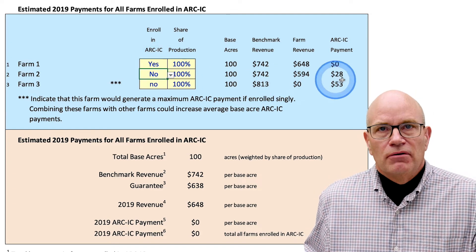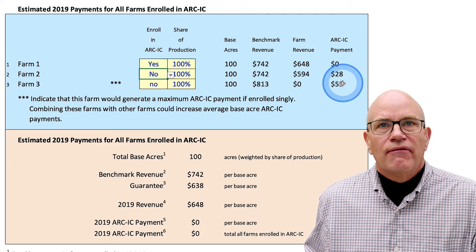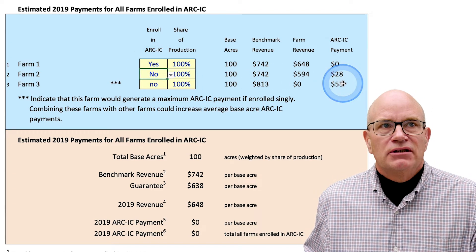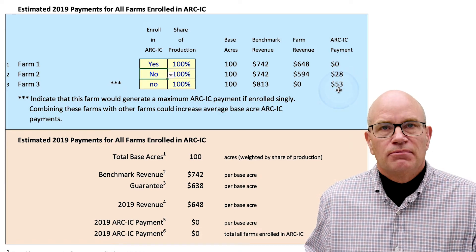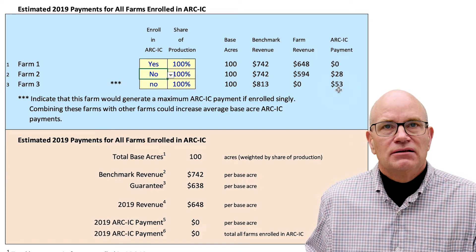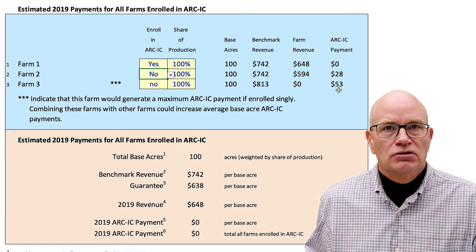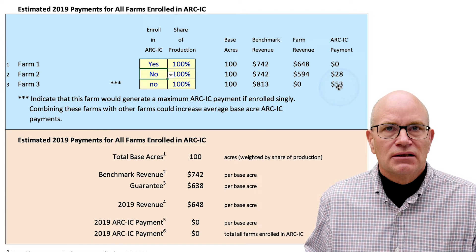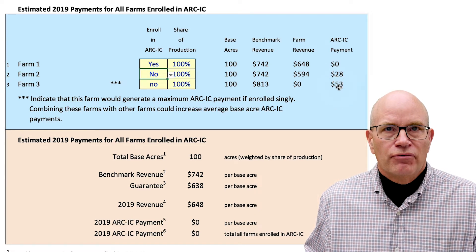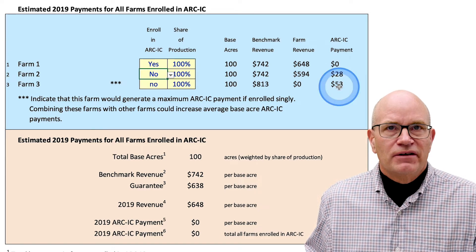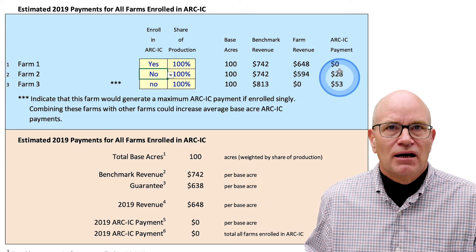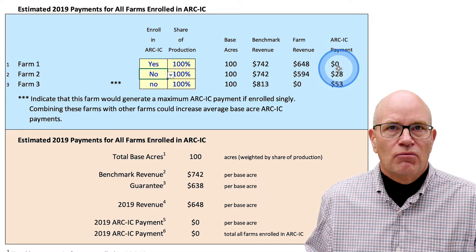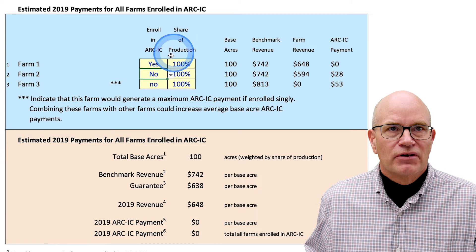Here's an example. We have three FSA farms here. This happens to be our ARC-IC payment calculator tool, which you can download from our farm bill website. Farm 3 makes a $53 payment, Farm 2 makes a $28 payment, and Farm 1 makes a $0 payment.